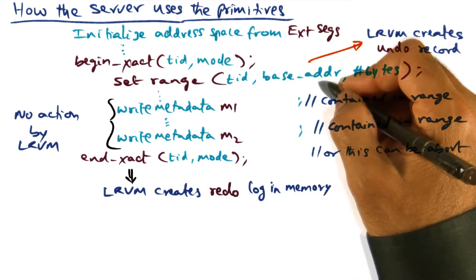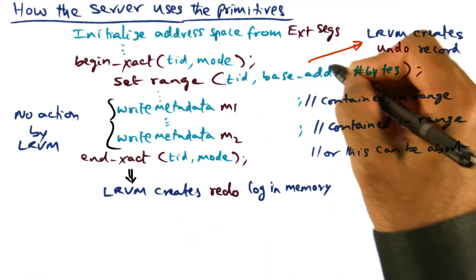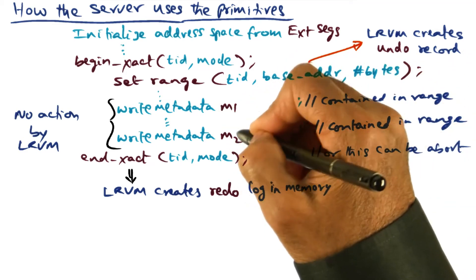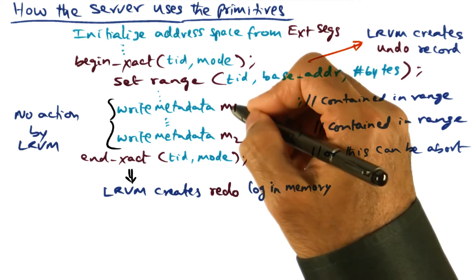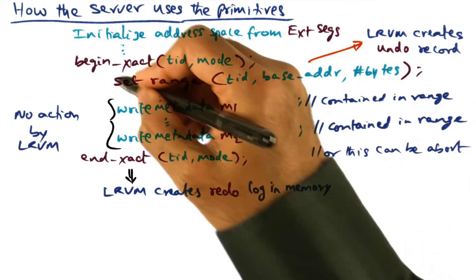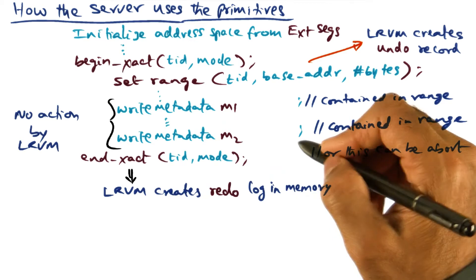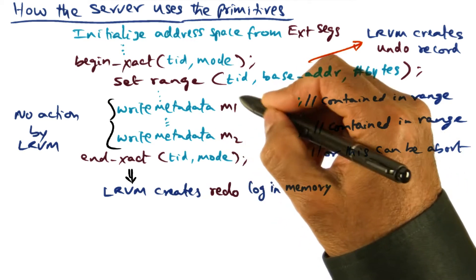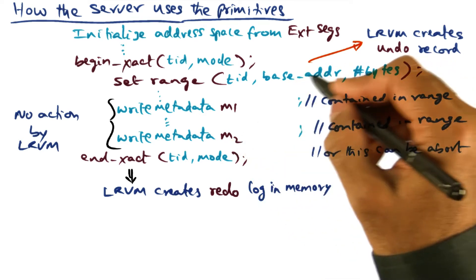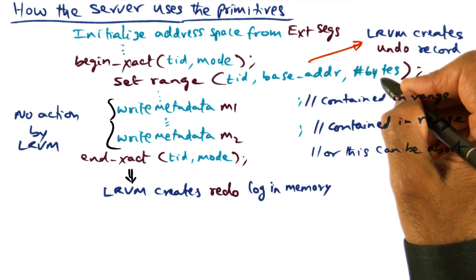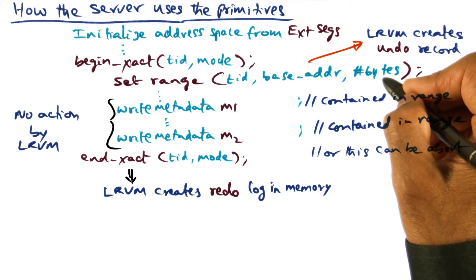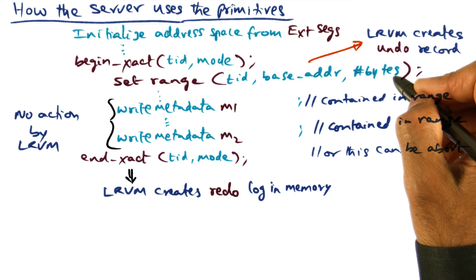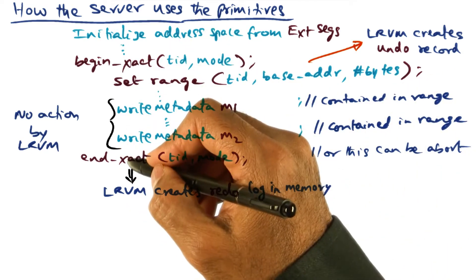It doesn't know within that region. LRVM does not know within this region specified by base address and the length where exactly these data structures are contained. All it knows is that this is the portion of the address space that is being modified in the critical section. That's why it's so important as a developer to make sure that the data structures that you're manipulating are within this region that you have signaled to LRVM. LRVM is basically thinking that there is a contiguous set of addresses starting here for a certain length that may have been modified in this critical section.